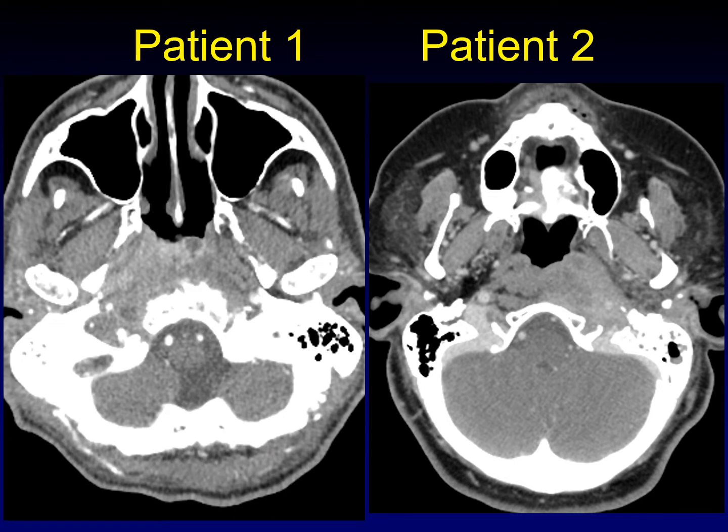These two patients look very much alike. When you see an elderly individual — usually elderly men — with erosion of the central skull base like this, there are two things that you need to consider: nasopharyngeal carcinoma and infection. Even a bacterial infection of the central skull base can have an erosive appearance, with osteomyelitis associated with it. It can look very aggressive, as can nasopharyngeal carcinoma.